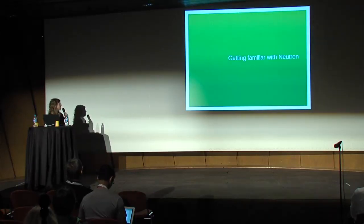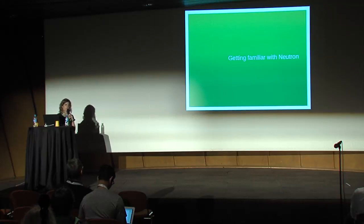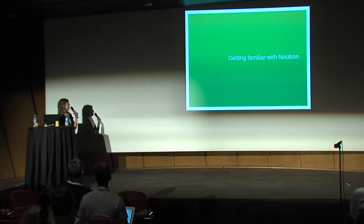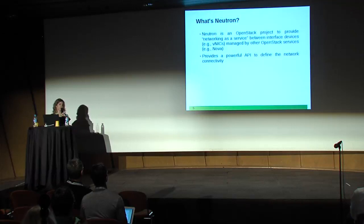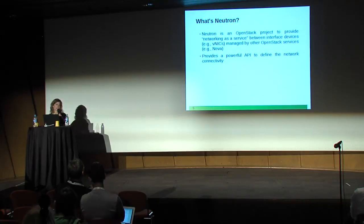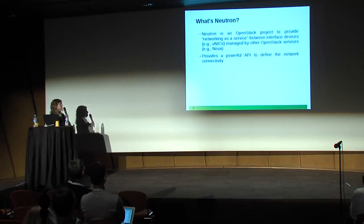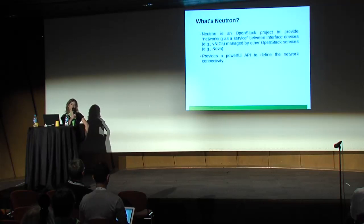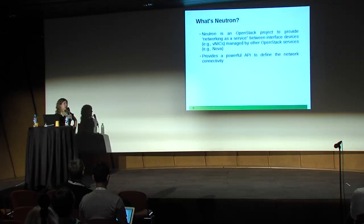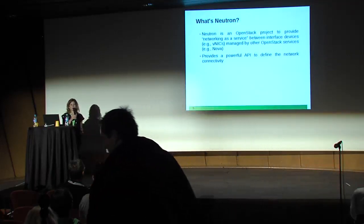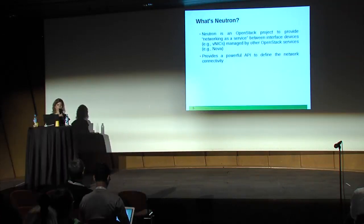Let's start with getting a little bit more familiar with Neutron, which is the prerequisite to contributing to it. Neutron is the OpenStack project that takes care of networking as a service. It handles the network connectivity between the several virtual interfaces connected to VMs, and it provides a powerful API to configure this connectivity, used by human operators or software orchestrating the cloud.